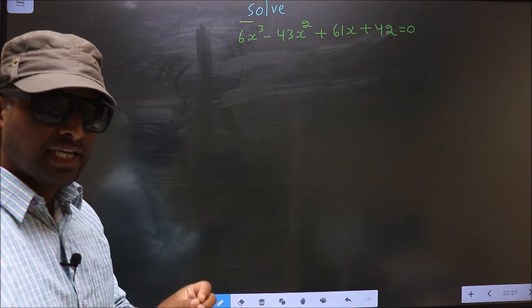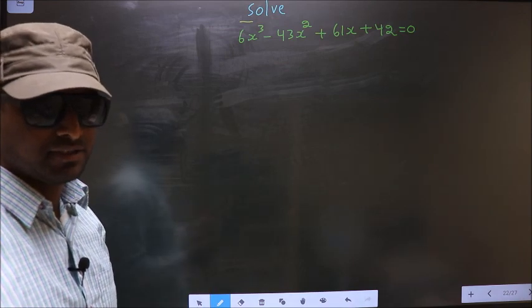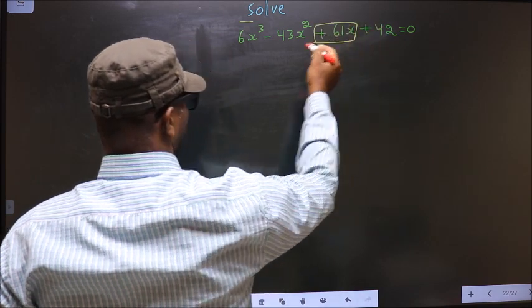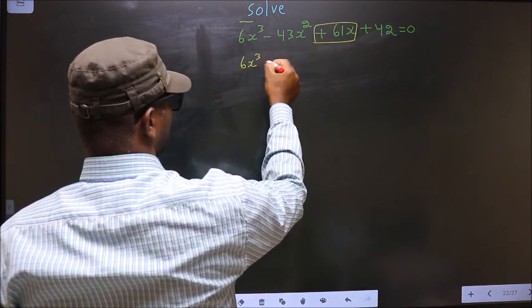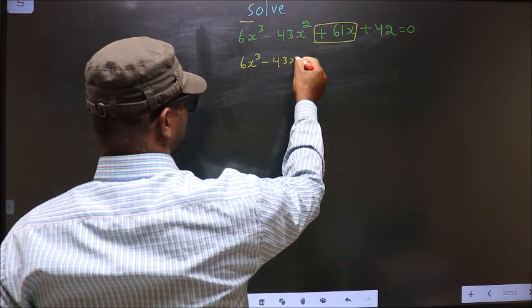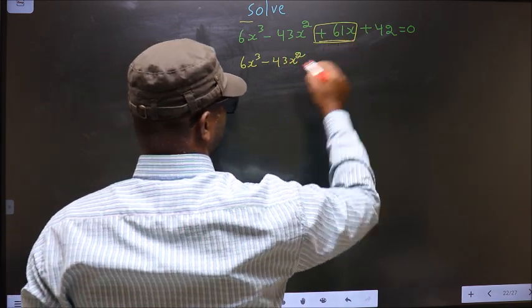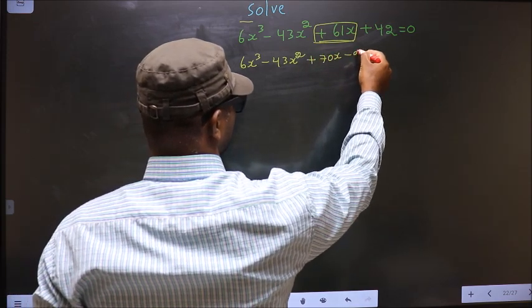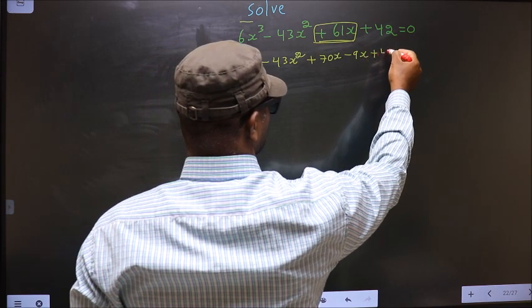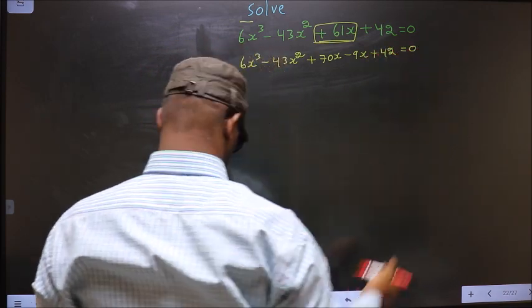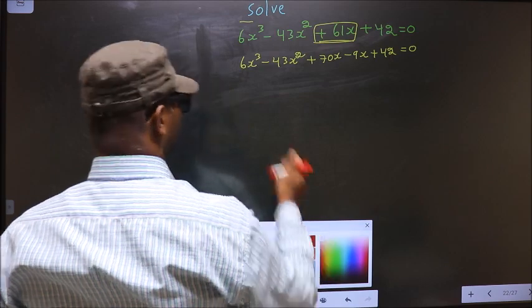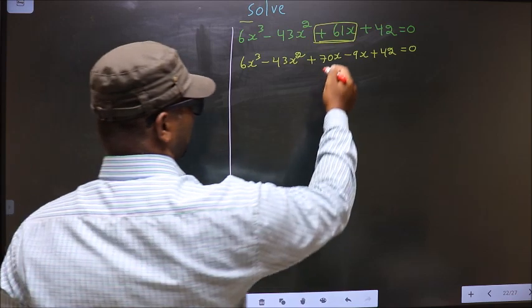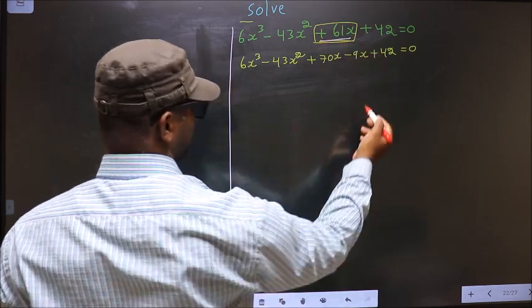For that we have to change the x term, that is plus 61x. So 6x³ minus 43x² — in place of 61x, now I write plus 70x minus 9x plus 42 equal to 0. In place of 61x, I have now written this.